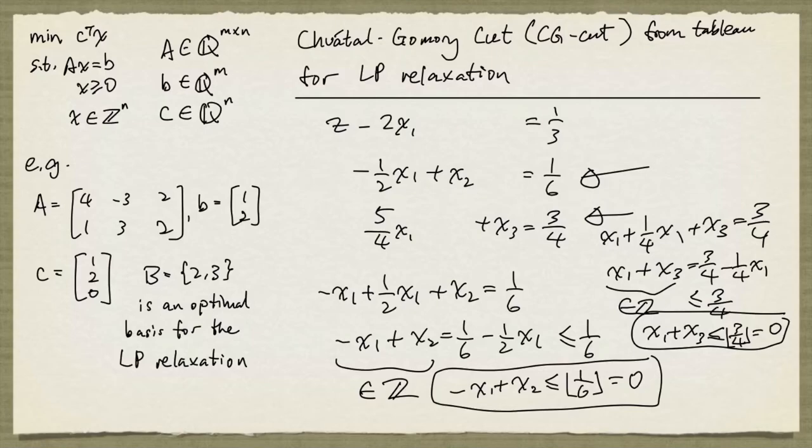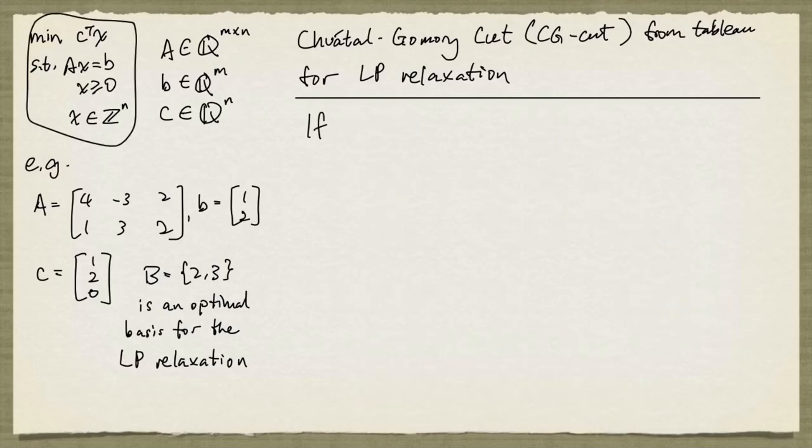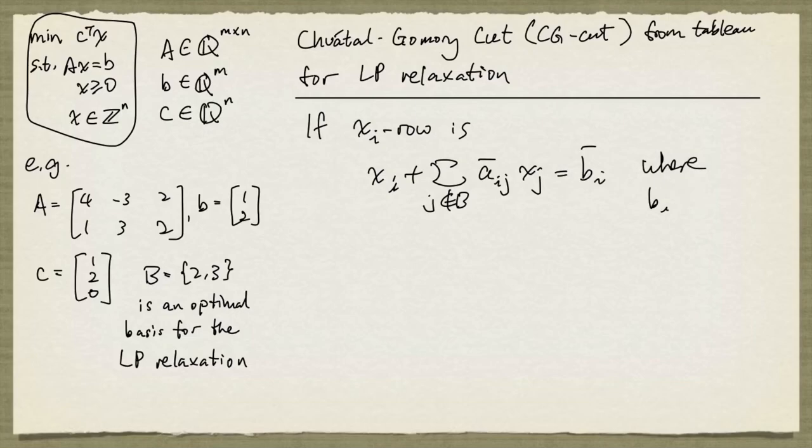In general, this is what we do. Suppose that in the tableau, we have an xi row that looks like this. So if bi bar is fractional, that is, the floor of bi bar is not equal to bi bar, then the following inequality is a CG cut.